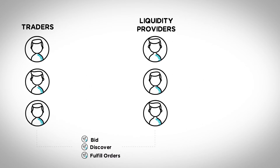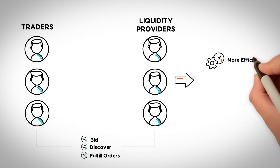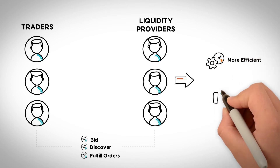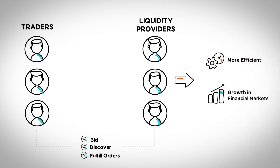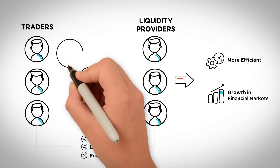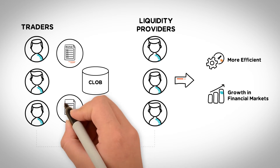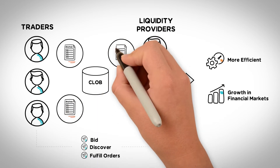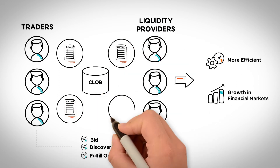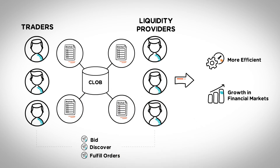This method of exchange is much more efficient than its predecessors and has led to an immense amount of growth in financial markets over the last three decades. The CLOB trade model allows all users to trade with each other instead of using an intermediary dealer. Users can also see bid orders and their value in real time, ensuring complete transparency among traders.